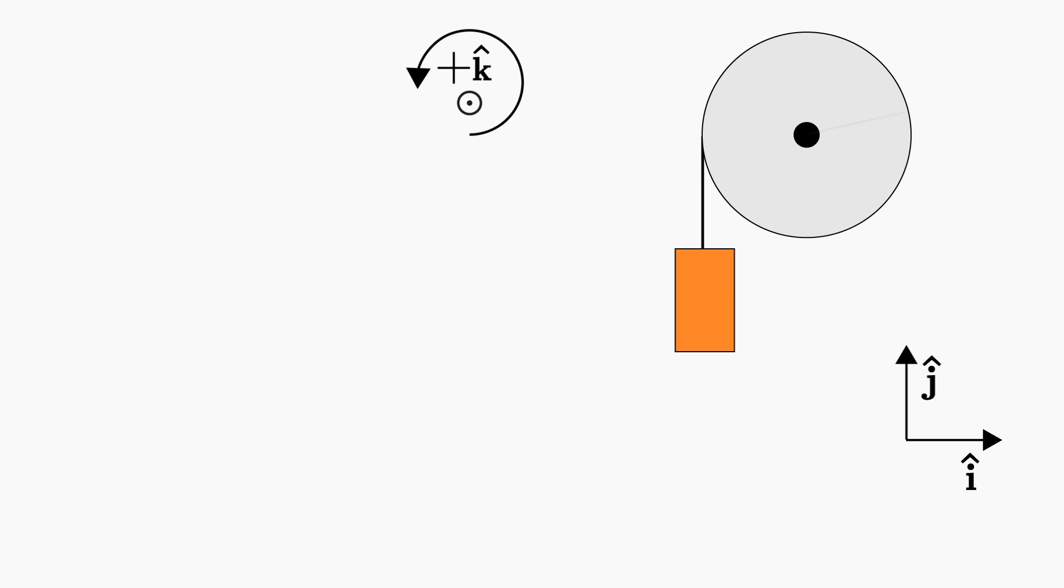In fact, if the pulley rotates a full turn in the clockwise negative direction, the angle changes by negative 2π. And 2π times r of the rope will be pulled up. So we can write that delta y equals negative r delta theta. Or, taking some derivatives, a1 equals negative r times alpha.